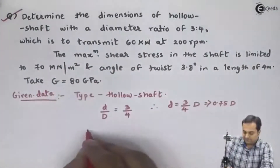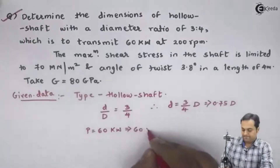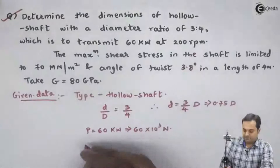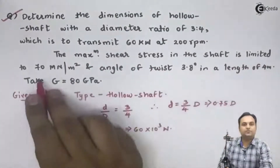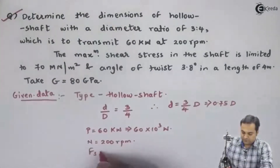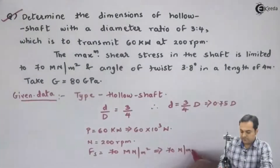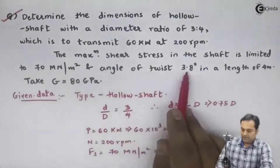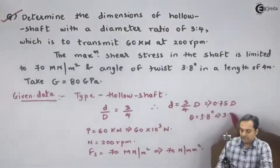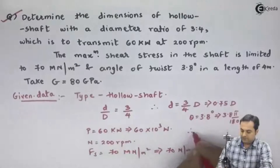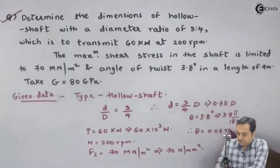Power is given as 60 kilowatts, which I will convert into watts. Speed N is given as 200 rpm. The maximum shear stress FS is 70 mega Newton per meter square, which is the same as 70 Newton per mm square because it is mega Pascal. Angle of twist theta is 3.8 degrees; converting to radians by multiplying by pi and dividing by 180 gives theta equal to 0.06 radians.